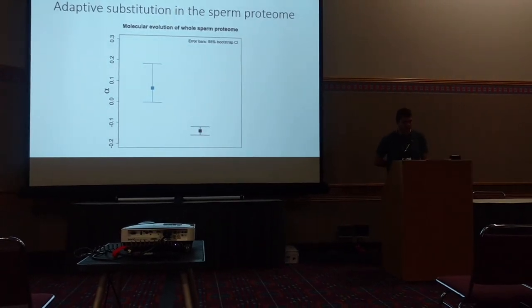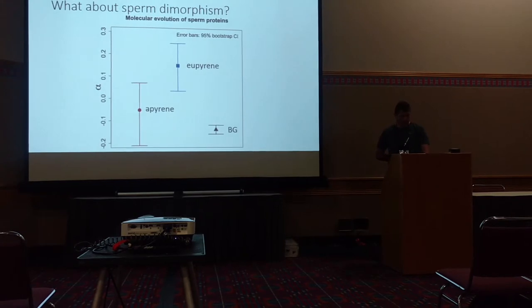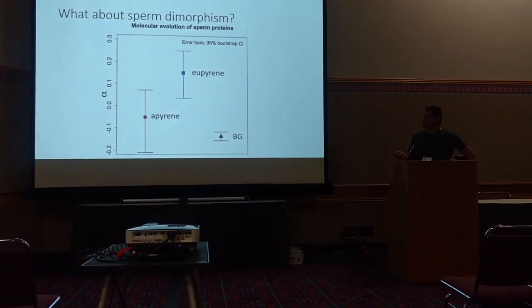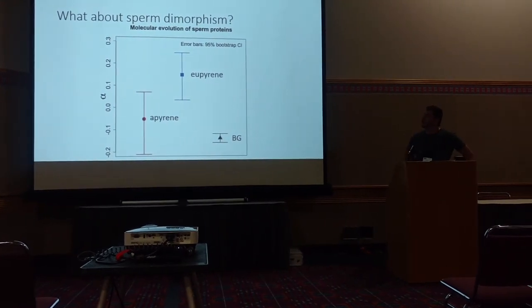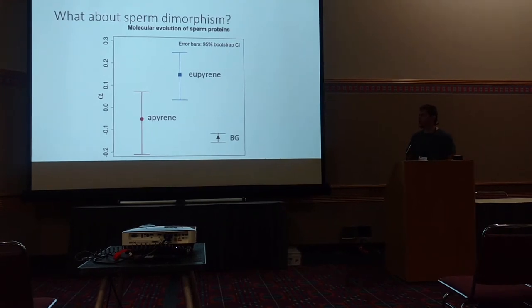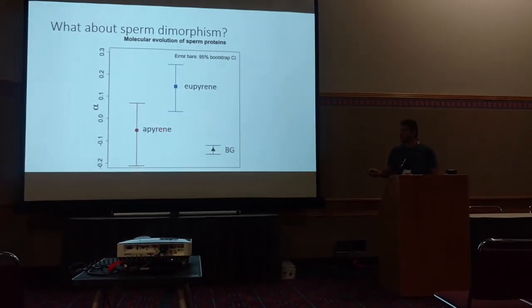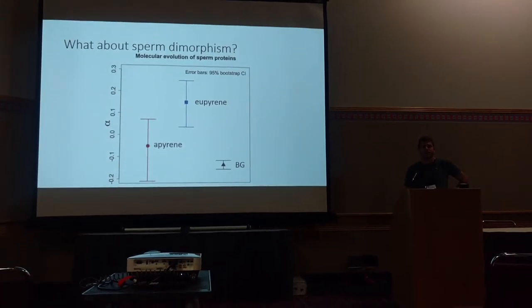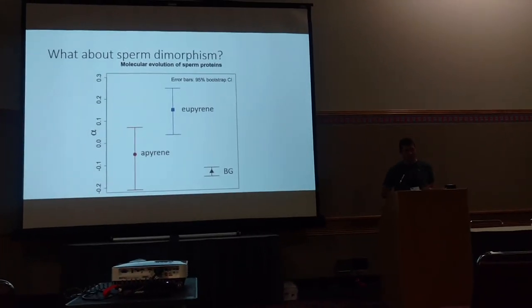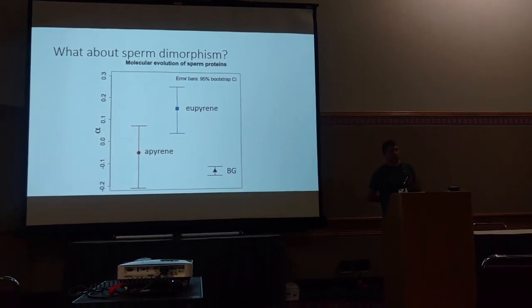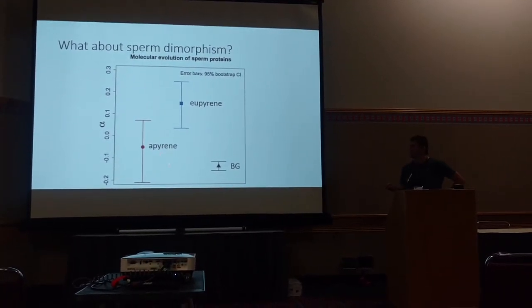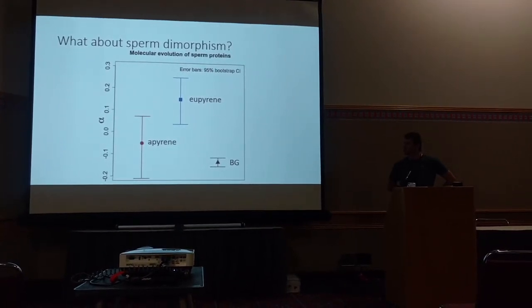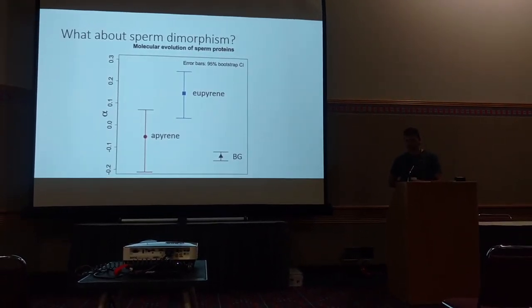When we split the proteome apart, it's actually a bit disappointing. We can see the same pattern visible in the nucleated or eupyrene set, but we honestly can't say much about the apyrene or anucleated set. If you remember from the sperm proteome slide, there are far fewer unique proteins in that set, so this is really just a lack of statistical power to get a good point estimate.